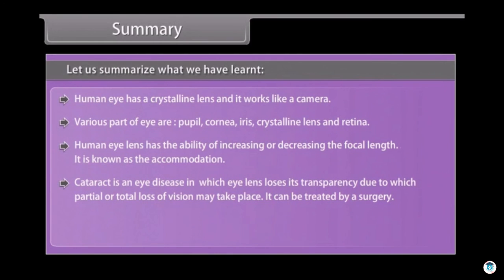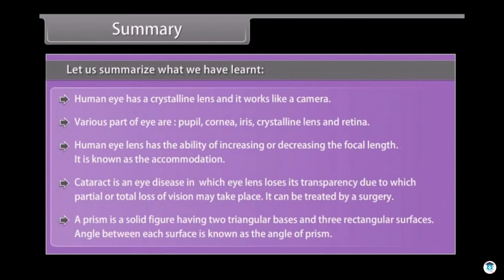Cataract is an eye disease in which eye lens loses its transparency due to which partial or total loss of vision may take place. It can be treated by a surgery. A prism is a solid figure having two triangular bases and three rectangular surfaces. Angle between each surface is known as the angle of prism.